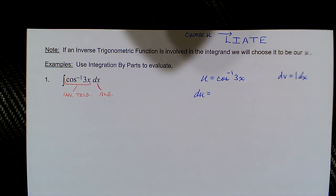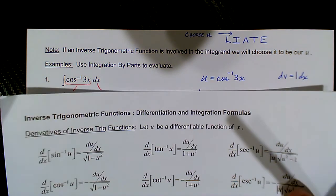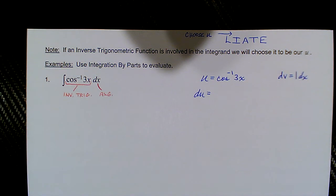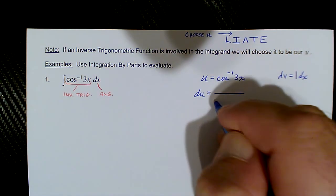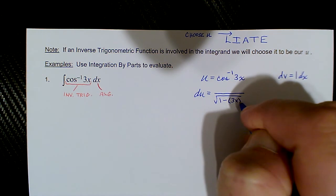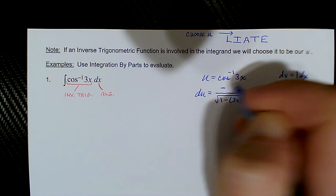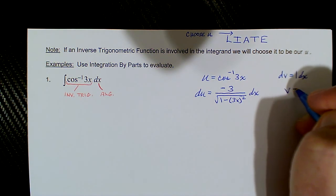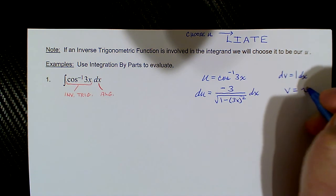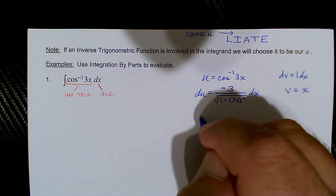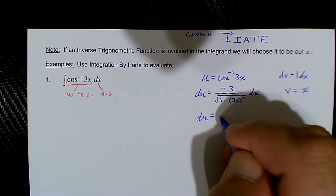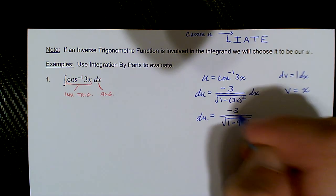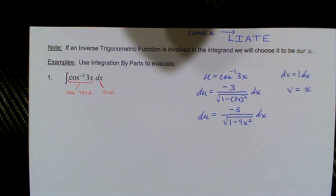You probably haven't memorized the formula for the derivative of inverse cosine, so feel free to use your formula sheet. For the inverse cosine it's negative du/dx over the square root of 1 minus u squared. So our du has the square root of 1 minus (3x)² in the denominator — that 3x needs to be squared — and the derivative of 3x is 3, giving minus 3 in the numerator. Integrating dv to get v, we integrate 1 with respect to x and get x. Squaring 3x gives square root of 1 minus 9x² in the denominator.